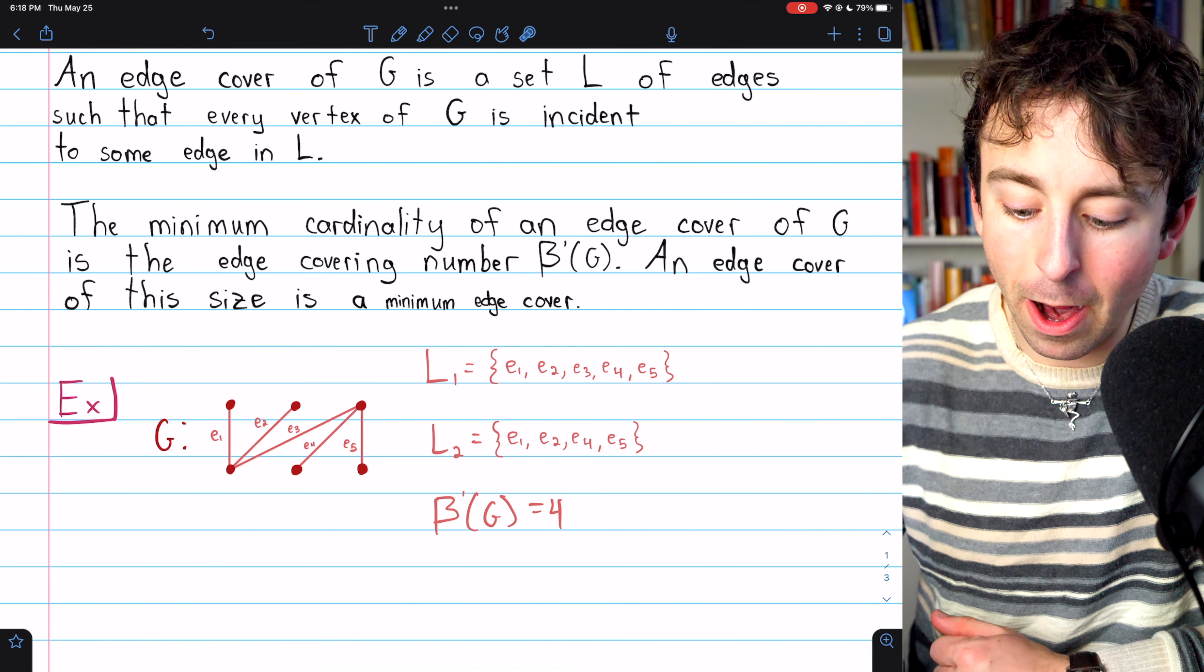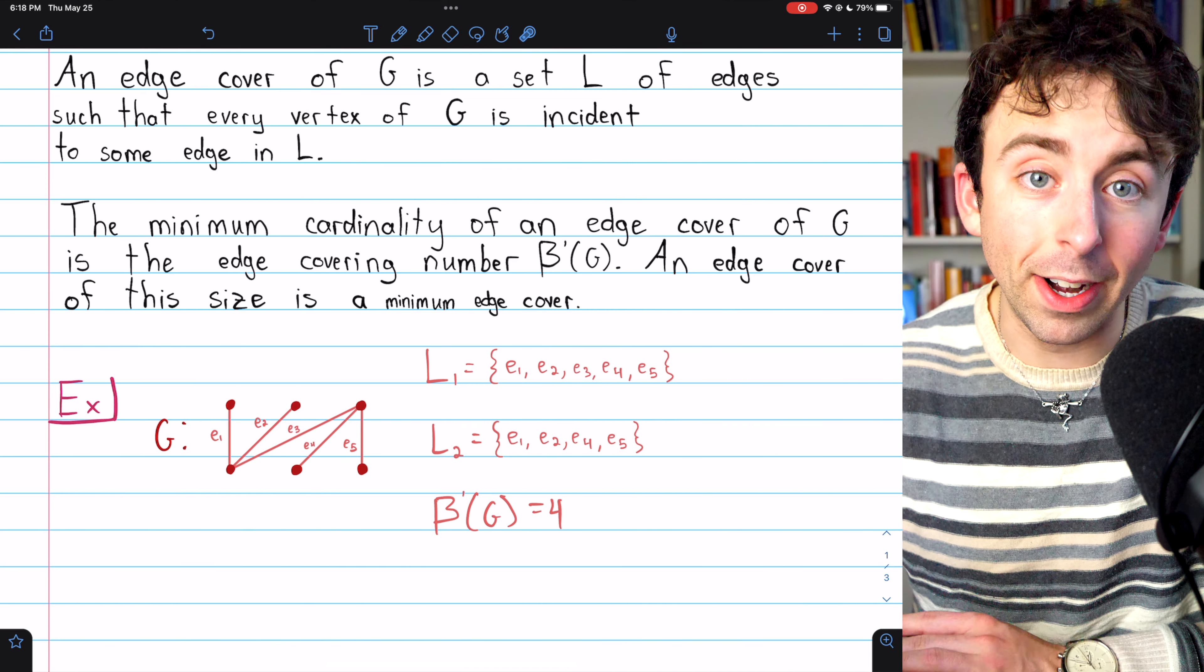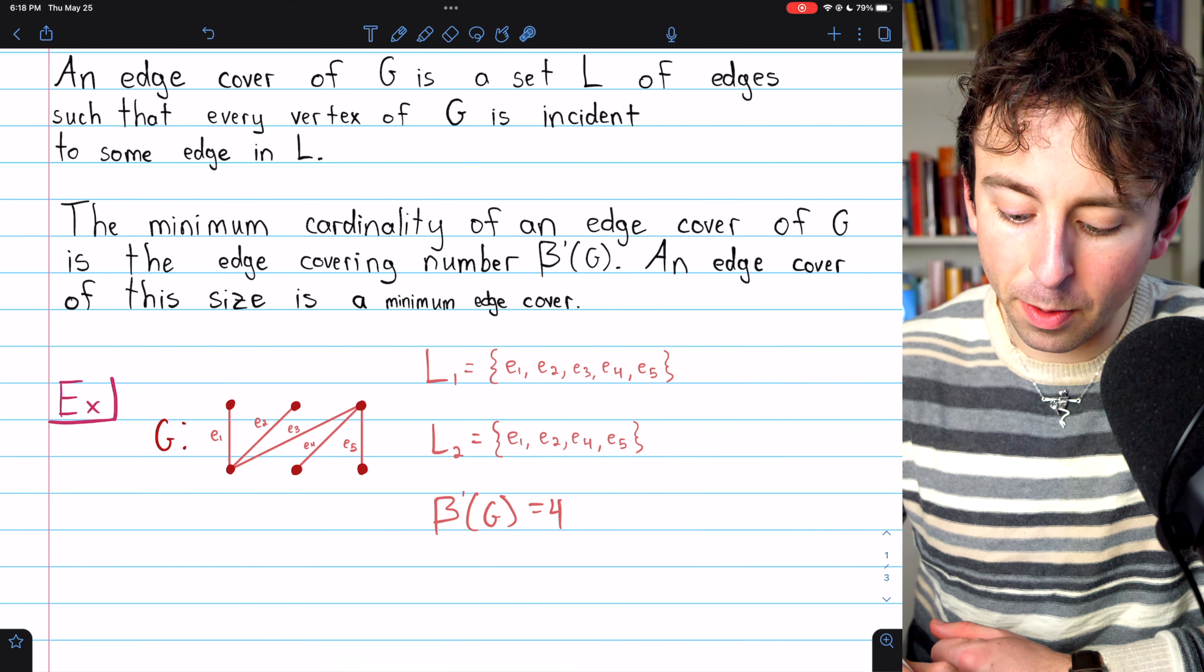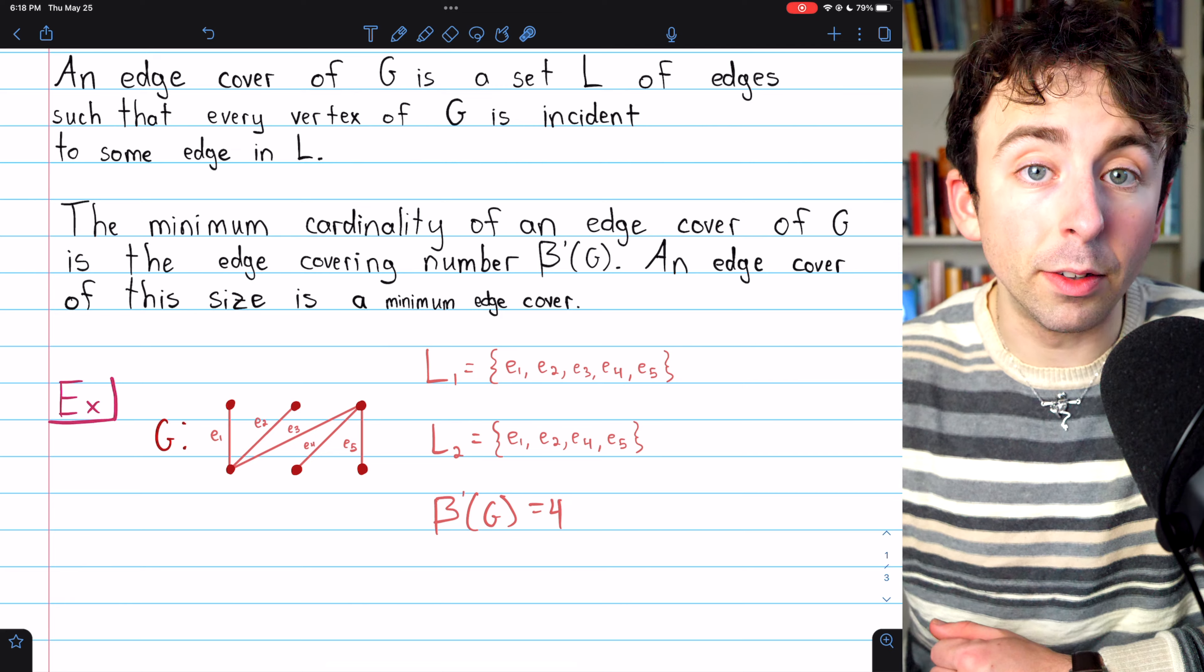So it's immediately apparent that all of these edges are necessary, and we see, in fact, they are sufficient. So this is a minimum edge cover. The edge covering number of this graph is four.